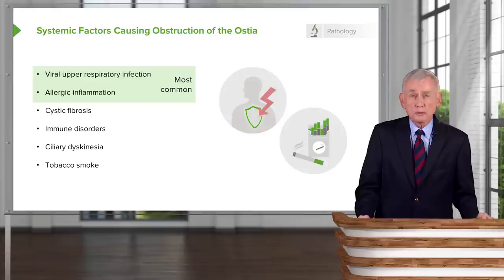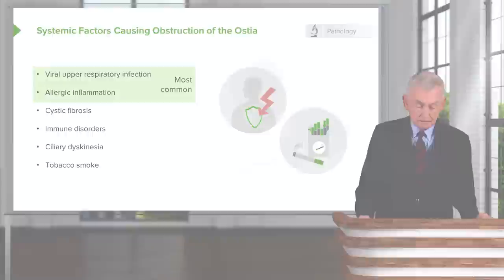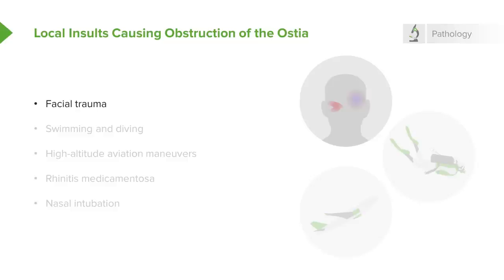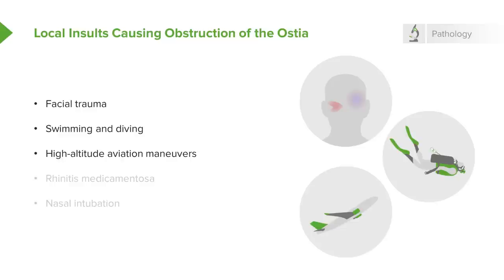Tobacco smoke is another factor — you may know several people who smoke and are always complaining of sinus problems. There can also be local insults to the face causing obstruction of the ostia, resulting in bacterial sinusitis, like facial trauma — for example, in prize fighters. People who do a lot of swimming and diving, recreationally or professionally, can also have sinus problems due to pressure changes underwater.